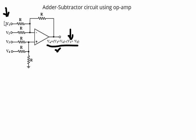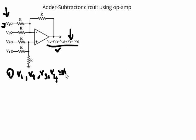Such analysis is called the superposition theorem in network analysis, where the output of a circuit with multiple inputs is derived by summing the outputs considering input sources individually. For example, V1 will be considered and V2, V3, and V4 will be made zero volts. Then we take V2 and make V1, V3, V4 zero and calculate the output. We add all these outputs to get the actual output.